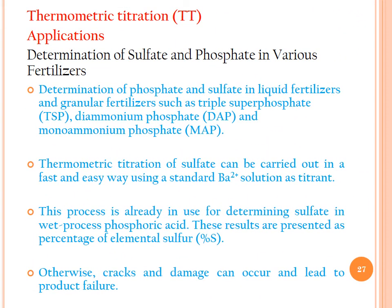Another application is the determination of sulfate and phosphate in various fertilizers—liquid fertilizers and granular fertilizers such as triple superphosphate (TSP), diammonium phosphate (DAP), and monoammonium phosphate (MAP). Stoichiometric titration of sulfate can be carried out quickly and easily using a standard barium solution as titrant, because barium precipitates sulfate as barium sulfate. This process is already in use for determining sulfate in wet-process phosphoric acid, and results are reported as percentage of elemental sulfur.